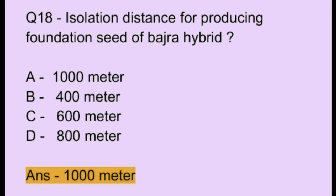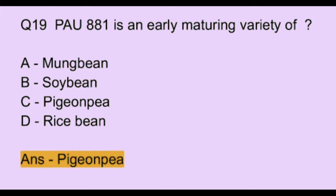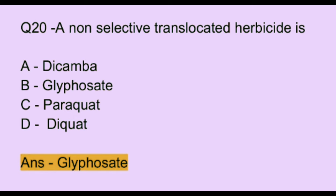Question number 19. PAU 881 is an early maturing variety of: Option A: moong bean. Option B: soybean. Option C: pigeon pea. Option D: rice bean. The correct answer is option C, which is pigeon pea.